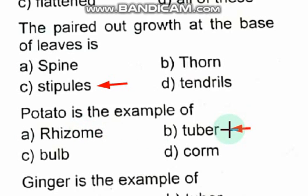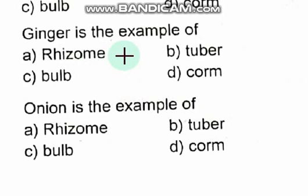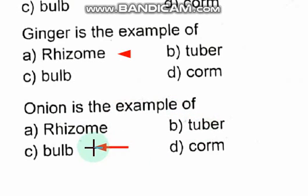Potato is an example of a tuber — option B is correct, not rhizome. Ginger is an example of a rhizome — option A. Onion is an example of a bulb — not rhizome, not tuber.